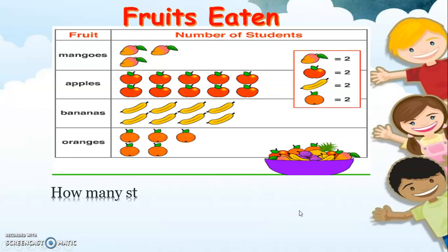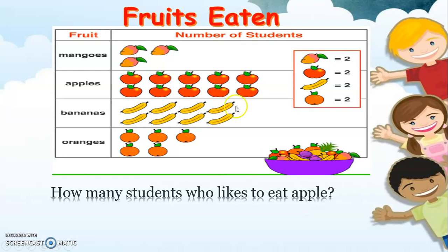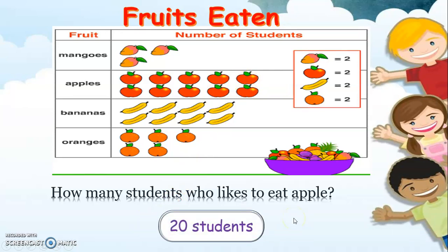How many students like to eat apple? We have ten apple pictures. If you look at the key, each apple is equal to two. Counting: two, four, six, eight, ten, twelve, fourteen, sixteen, eighteen, twenty. We have twenty students who like to eat apple.